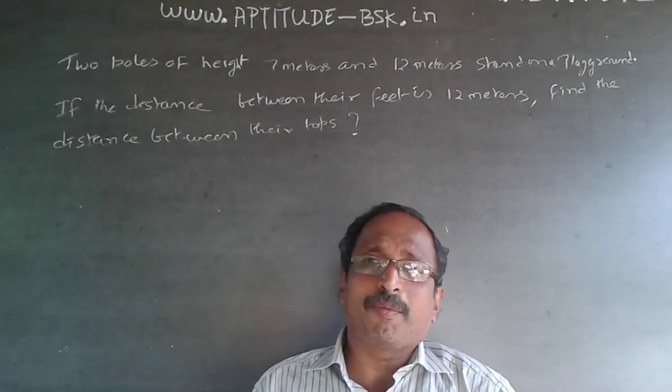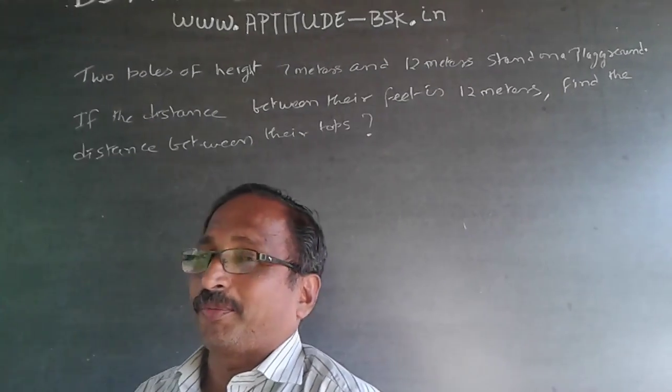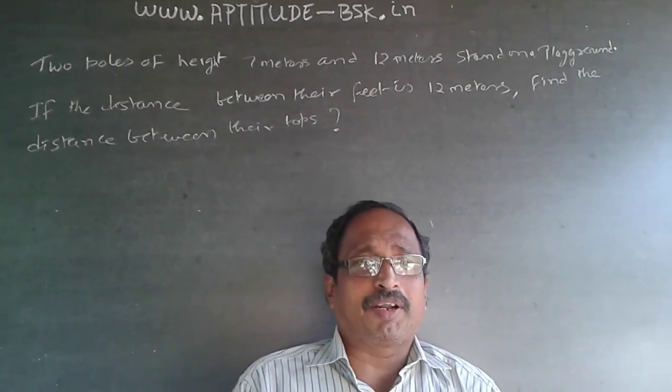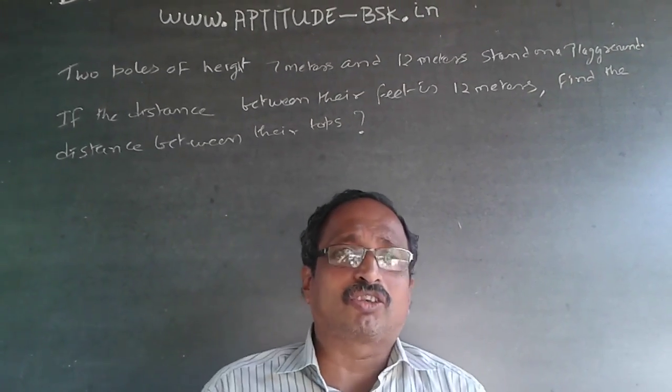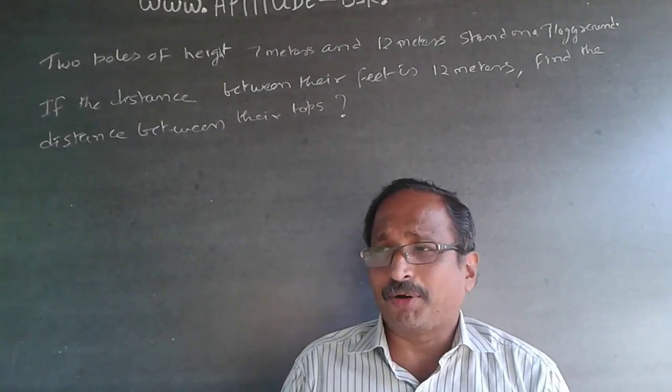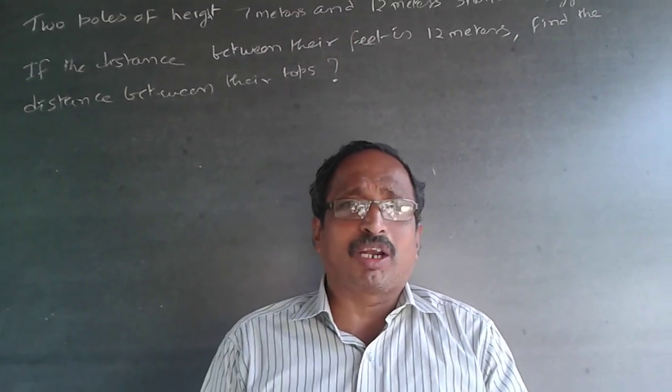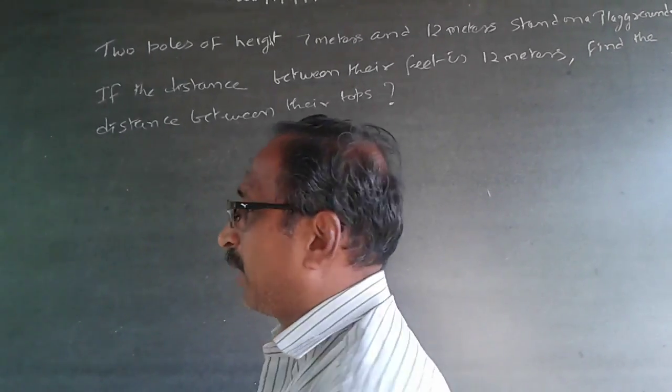This is a simple aptitude question on right angle triangle. The property is that hypotenuse square will be equal to adjacent square plus opposite square. This is the Pythagoras theorem, and that property is applicable here.